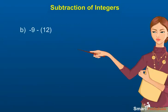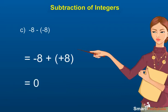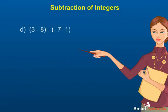(b) -9 - 12 = -9 + (-12) = -21. (c) -8 - (-8) = -8 + (+8) = 0.